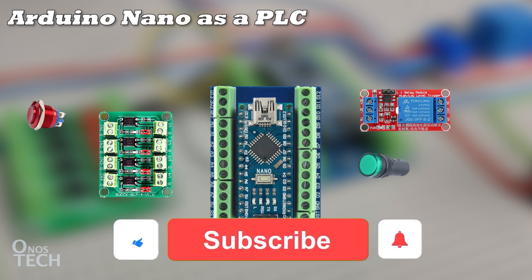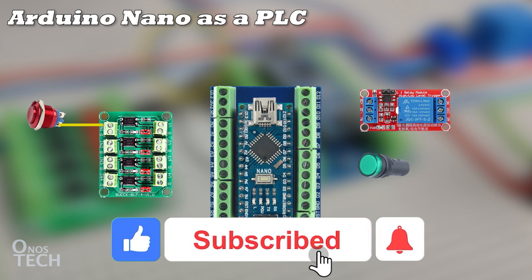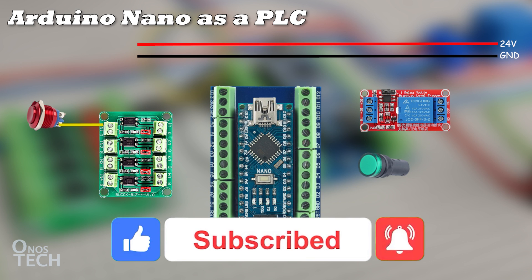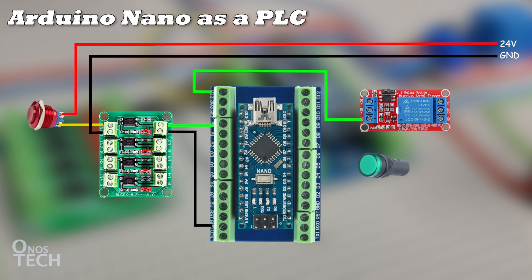For today's demonstration, connect a push-button switch to channel 1 of the PC817 opto-isolator module, then to S.1 of the Arduino Nano. Q.1 of the Nano connects to the relay module, then to an indicator lamp.